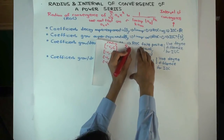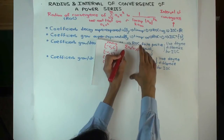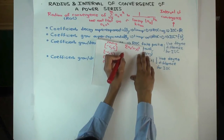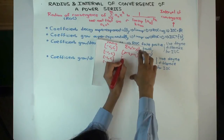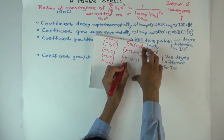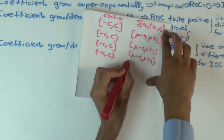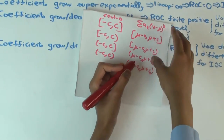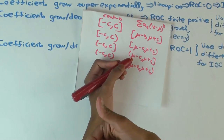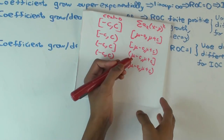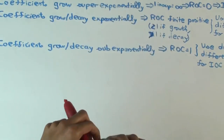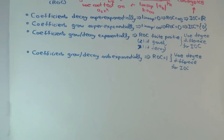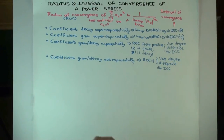If you're looking at the power series ak times (x minus mu) to the k, centered at mu, then once you find the radius of convergence to be c, the interval of convergence is mu minus c to mu plus c — again with four possibilities for the endpoints. The easy cases are radius zero or infinity: infinite radius gives all reals, zero radius gives just a single point (which is 0 if centered at 0, or mu if centered at mu). If the radius is finite and positive, you have to check whether the endpoints are included.